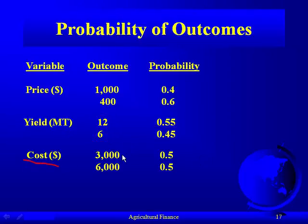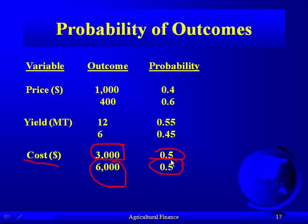If we look at cost, it fluctuates between $3,000 and $6,000. There's a 55% chance that cost is only $3,000, but a 45% chance it could be as much as $6,000. That may be because of different chemicals that have to be put on the crops in some years — insecticides and water usage depending on drought conditions.